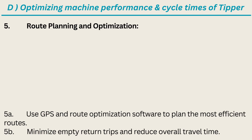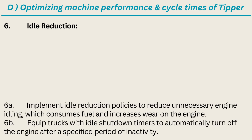5. Route Planning and Optimization: use GPS and route optimization software to plan the most efficient routes. Minimize empty return trips and reduce overall travel time. 6. Idle Reduction: implement idle reduction policies to reduce unnecessary engine idling, which consumes fuel and increases wear on the engine.